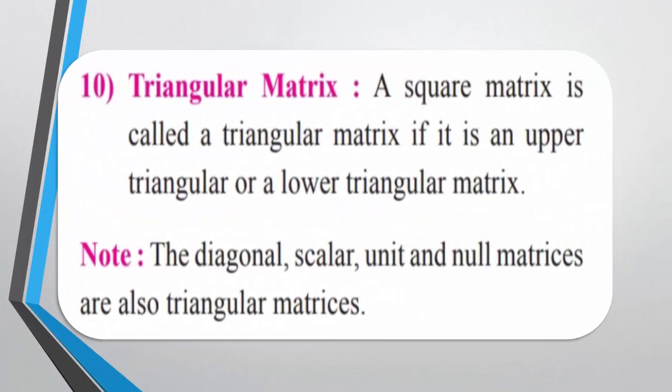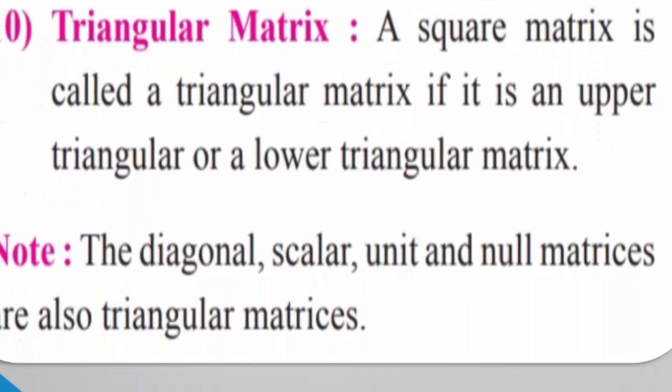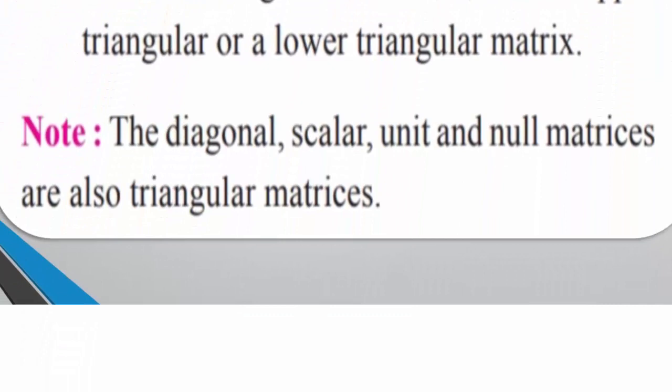Triangular Matrix: A square matrix is called a triangular matrix if it is either an upper triangular or a lower triangular matrix. For example, diagonal, scalar, unit, and null matrices are all triangular matrices.